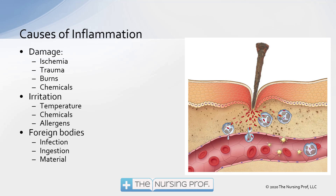Going back to the damage piece — it could be ischemia causing the inflammation. Anything that is damaging cells in the body, whether that's ischemia, trauma, burns, chemicals — anything damaging our cells is going to trigger inflammation. Irritation from high temperature, burns, body heat, chemicals, and allergens will also trigger inflammation. Foreign bodies and infection — including ingestion of a foreign body such as a GI bug or food poisoning — and other foreign material like the rusty nail are all causes.